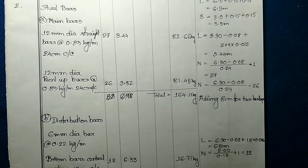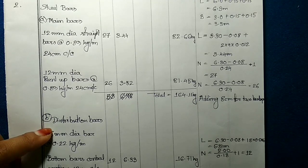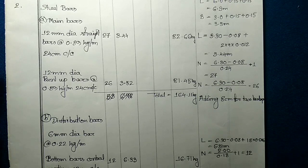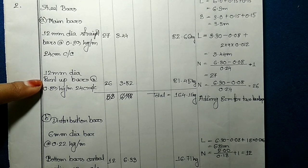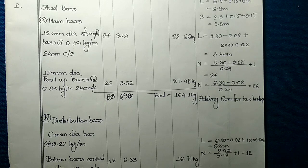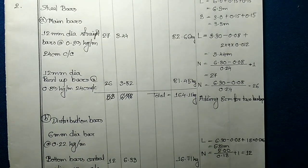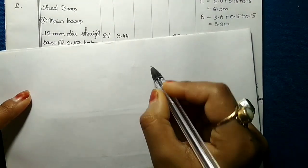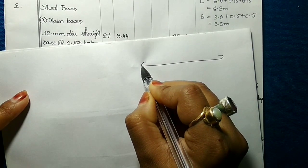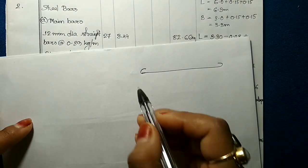The next item will be steel bar, and we are going to calculate it under two heads: main bar and distribution bar. In main bar we have two kinds — one is straight bar and one is bent up bar. For both we are using 12mm dia bar at 24cm spacing, but we need to calculate the length and number separately. For the straight bar, the form is as follows.